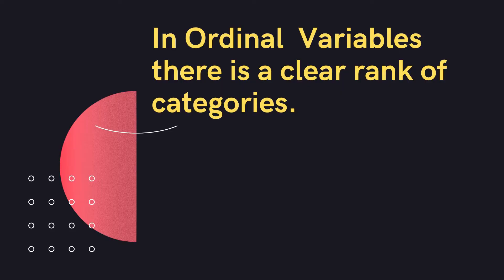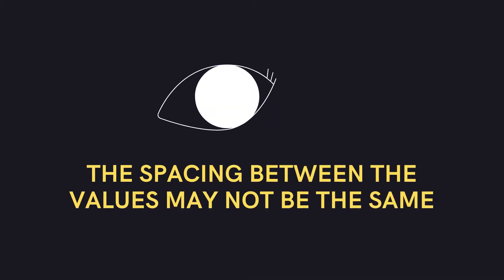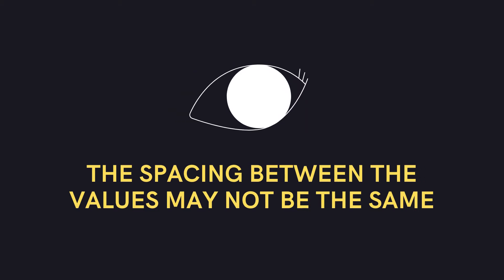The second level is ordinal. When we deal with ranks, we are talking about ordinal level of measurement. Ordinal variables are ranked according to categories. These categories could be, for example, app rankings, economic status, educational status, or any other such ranking. An important thing to remember is that the spacing between these ranks may not be the same.